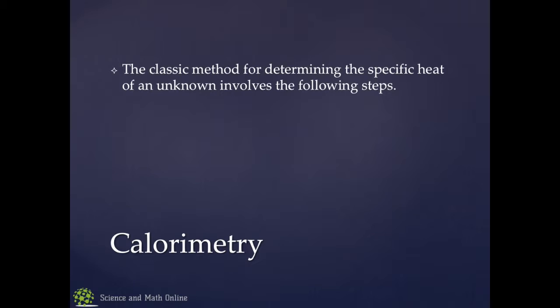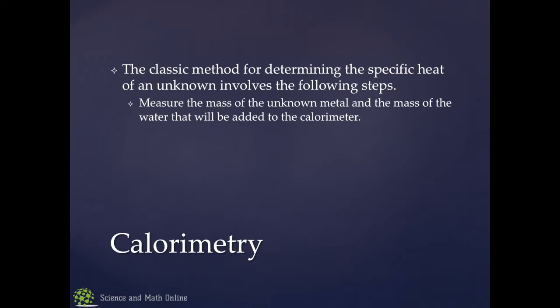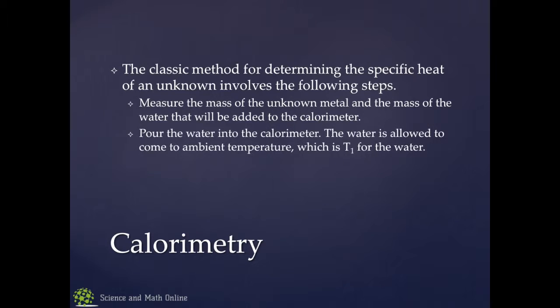So, the classic method is to do this. And it's long. I'm going to try to run through an example of what this looks like. These are the steps. You would measure the mass of some unknown metal. And that's usually what you're doing here. You're doing some type of unknown metal. And you would record the amount of water that you're going to be using and record its mass as well. Then you pour that water into the calorimeter. And you let it come to just whatever the ambient temperature is. And that's going to be T1.